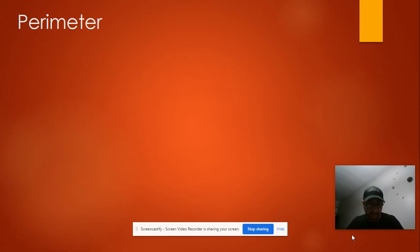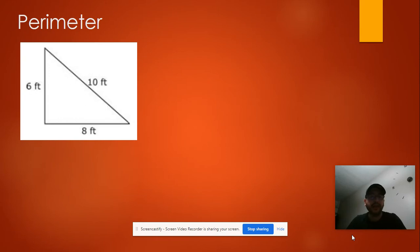To find the perimeter, we add the surroundings. So the perimeter will be the surroundings. It will be 6 plus 8 plus 10. That will be my perimeter for this triangle. So my perimeter will be 24.